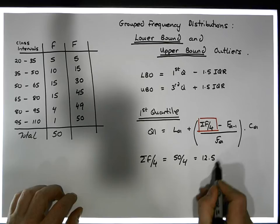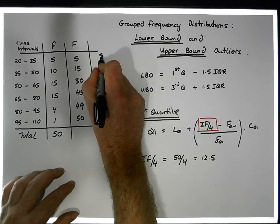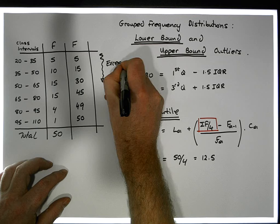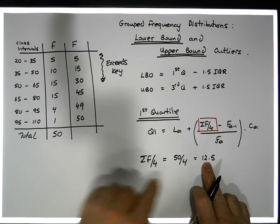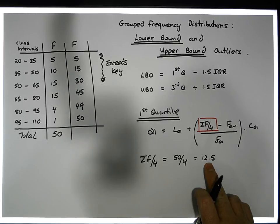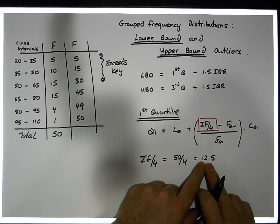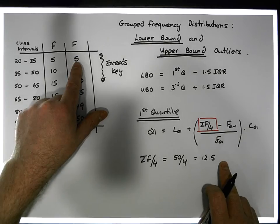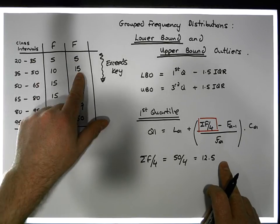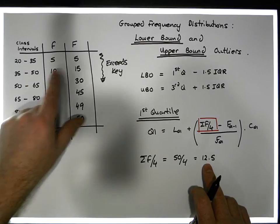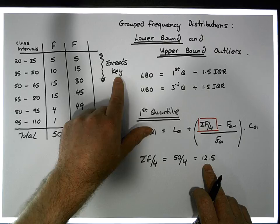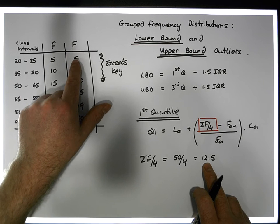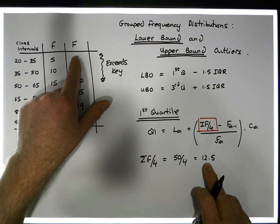So what we actually do now is take this key value and walk down the cumulative column until we find the first cumulative frequency that exceeds our key — that exceeds 12.5. A quarter of the observations represents 12.5 observations, so the quartile has to be between the 12th and the 13th observation. We can see from the cumulative frequencies that five observations are less than 25 and 15 are less than 50 — so the 12th and 13th observations actually reside in that class. The first cumulative frequency that exceeds 12.5 is this 15 here.